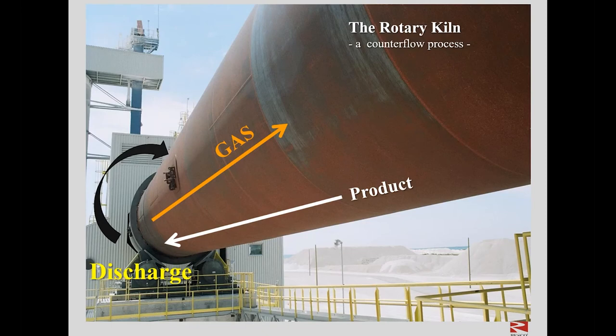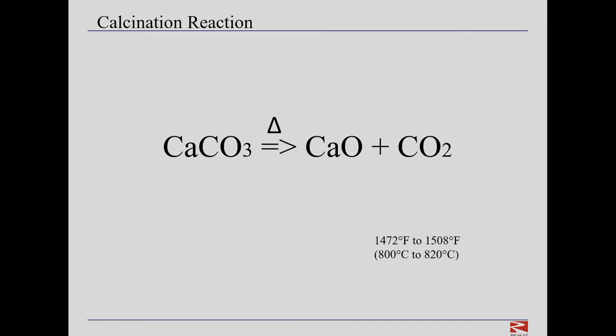The rotary kiln itself can be looked upon as a big chemical reactor. It is a counterflow process in that the exhaust gas from combustion travels from the lower discharge end to the feed end, and the kiln product moves downhill from the feed end to the discharge. Our discussion will focus on the calcination reaction, which is the conversion of calcium carbonate — using heat, symbolized by the triangle — into calcium oxide, also called lime, and carbon dioxide. This equation is central to every lime plant and every cement plant. Unfortunately, this chemical reaction has a high energy cost, as the reaction does not proceed until about 1,500 degrees Fahrenheit is reached in the kiln.